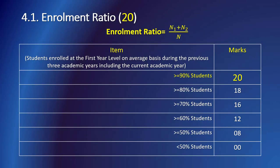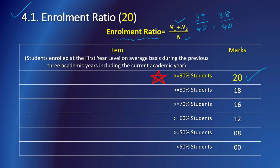Based on information about intake and successful students, sub-criterion 4.1 requires calculation of the enrollment ratio. From the previous table, N1 plus N2 divided by N gives the enrollment ratio. Criterion 4.1 is purely data-based: if enrollment strength is more than or equal to 90% of sanctioned seats, the program is awarded 20 marks. In our example, the enrollment ratios are 39/40 for the current academic year, 38/40 for the previous academic year, and 40/40 for CAYM1.